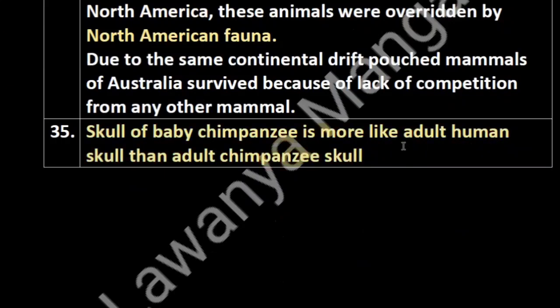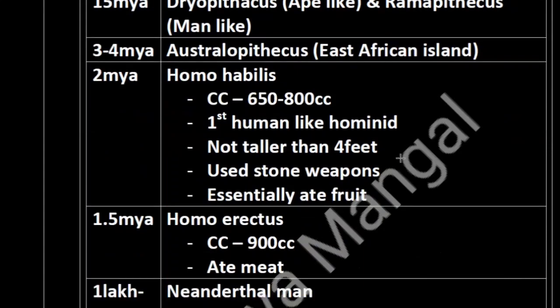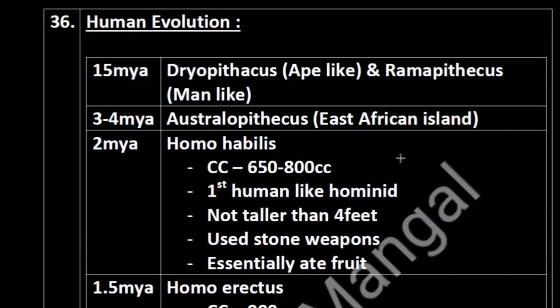The skull of a baby chimpanzee is more like an adult human's skull. Fifteen million years ago came Dryopithecus — more ape-like — and Ramapithecus — more man-like. Then 3 to 4 million years ago came Australopithecus, majorly in East Africa.